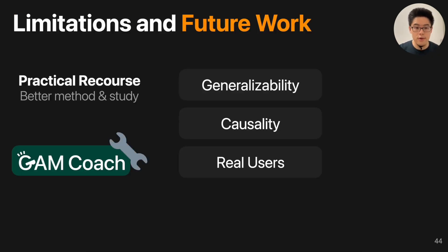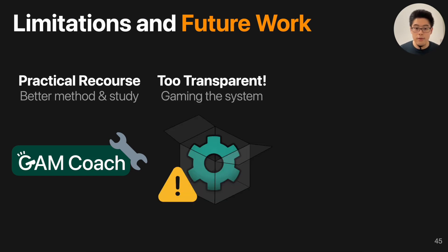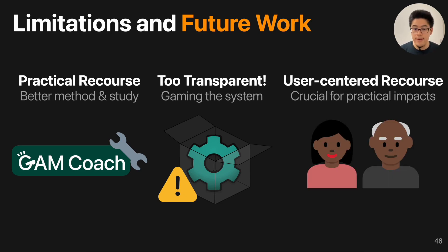Finally, we discuss limitations and future work for GankCoach. Our method and study can definitely be improved — future researchers can generalize our methods to different model types and incorporate causality when generating recourse plans. We also encourage researchers to engage with real users to study how they use recourse tools in real life. Some argue our tool has too much transparency and that users might game the system — we acknowledge this tension between decision-makers and subjects, and future researchers can study the right amount of transparency to benefit both parties. We emphasize the need for user-centered recourse: as we've seen, users' preferences vary greatly, and there are exciting research opportunities such as using chatbots to provide interactive recourse or predicting user preferences automatically.